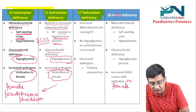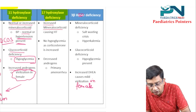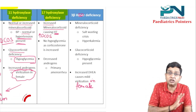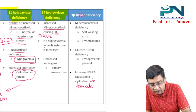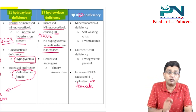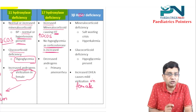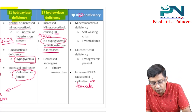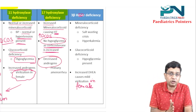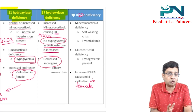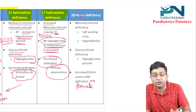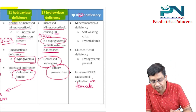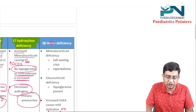In 17-hydroxylase deficiency, there is increased mineralocorticoid activity — increased deoxycorticosterone — so hypertension is present. There is no hypoglycemia because corticosterone is increased, and corticosterone is a mineralocorticoid with glucocorticoid activity. The androgens are decreased, so aromatase activity is not present, estrogen is not produced, and there is primary amenorrhea. So which enzyme deficiency causes primary amenorrhea? The answer is 17-hydroxylase.